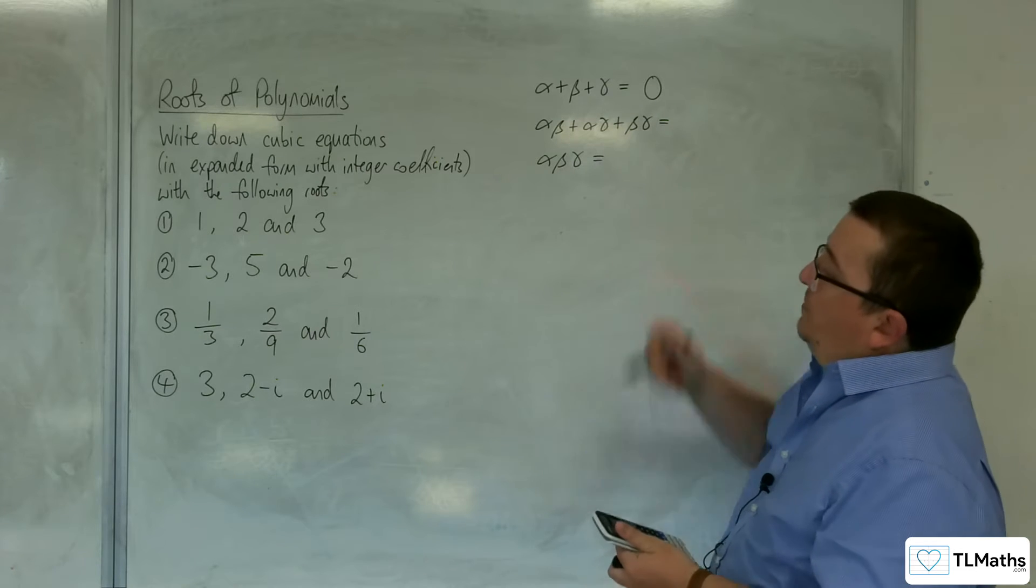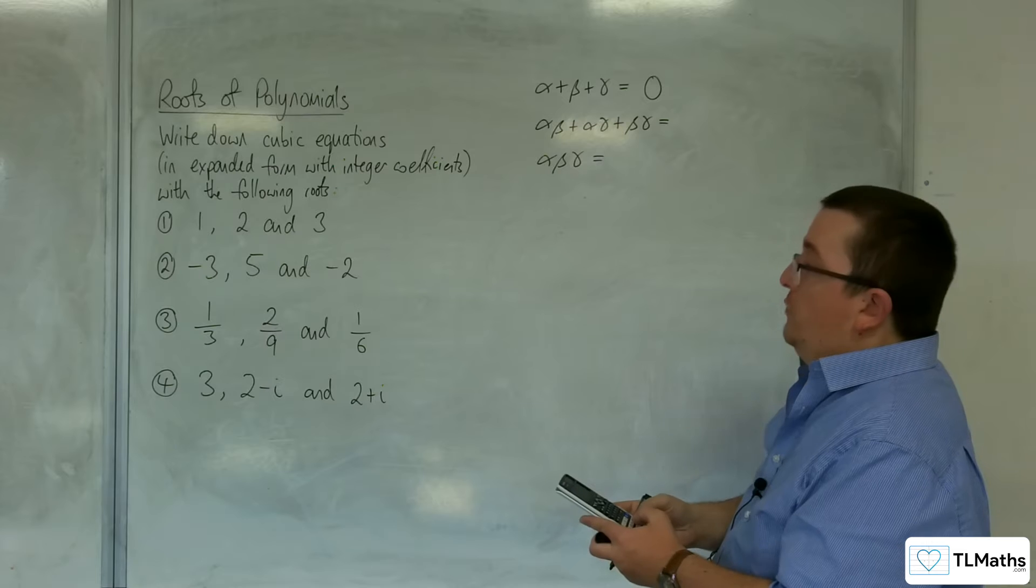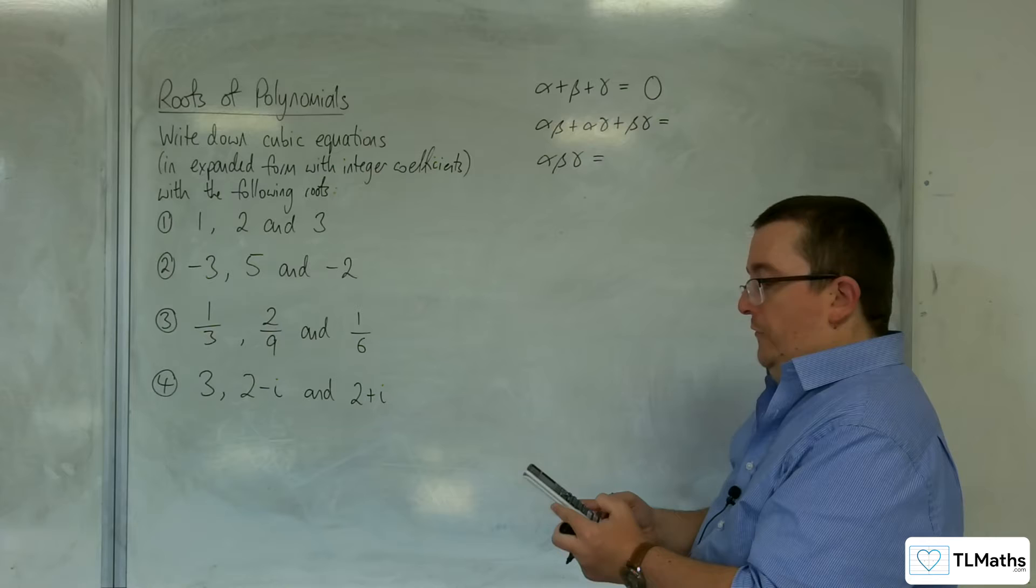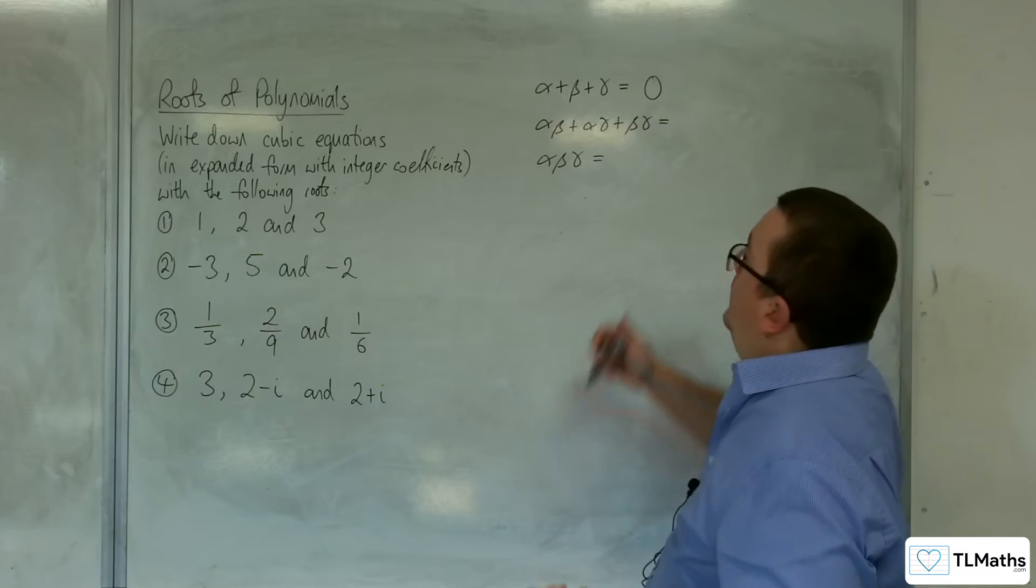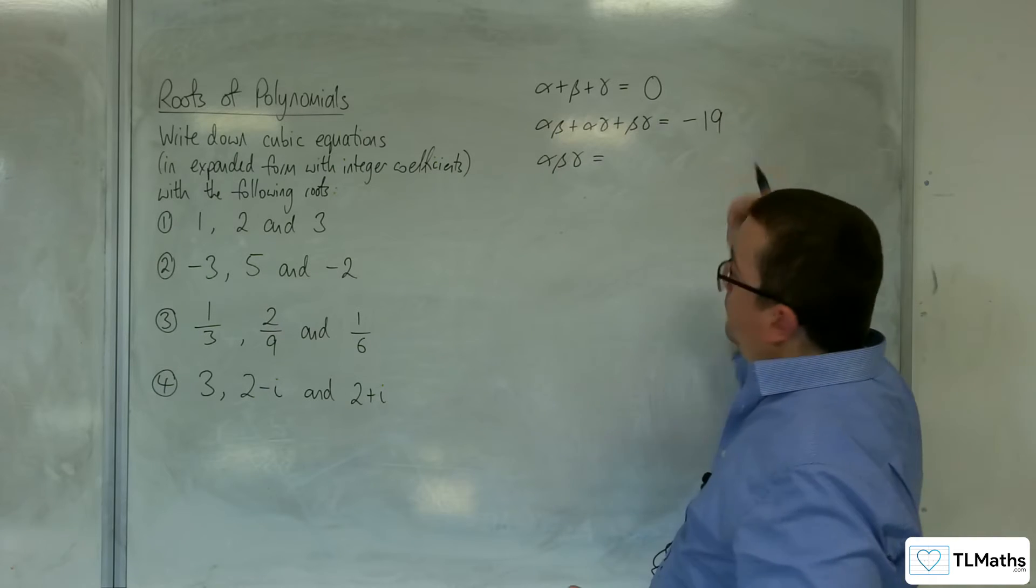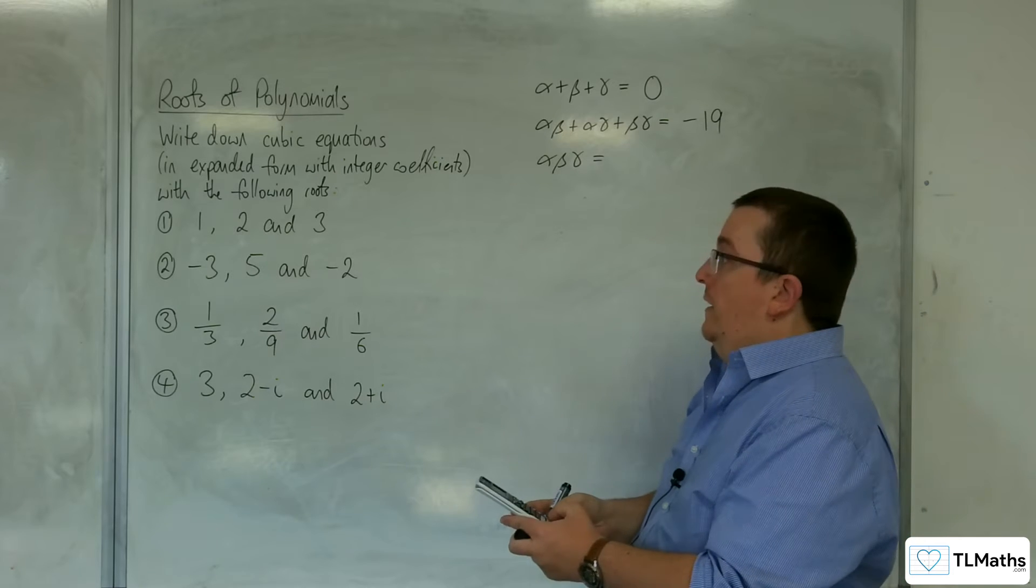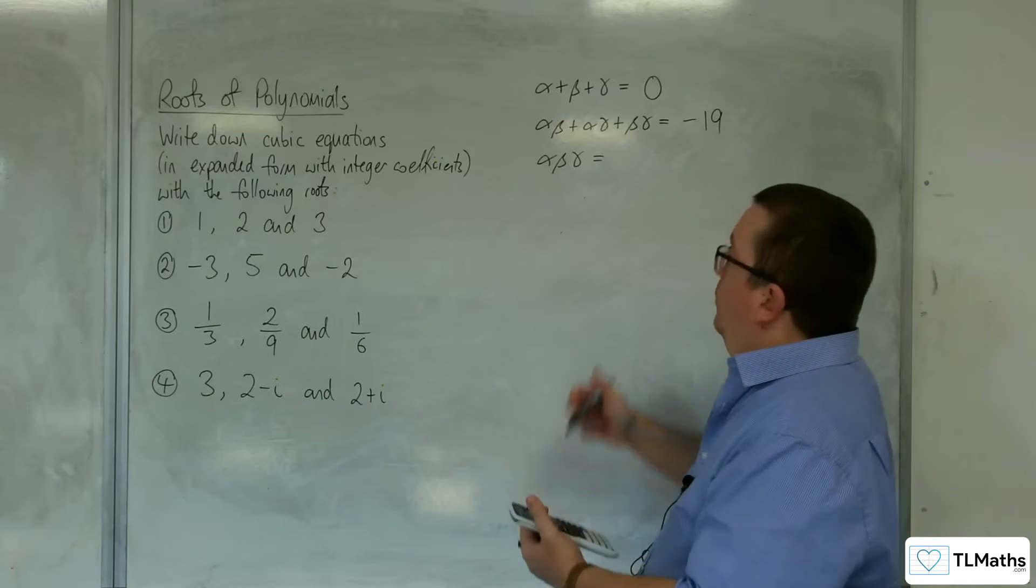Then we've got the product pairs. So we'll have minus 3 times 5 plus negative 3 times negative 2 plus 5 times negative 2, and we get minus 19. Then alpha beta gamma will be minus 3 times 5 times minus 2, which is 30.